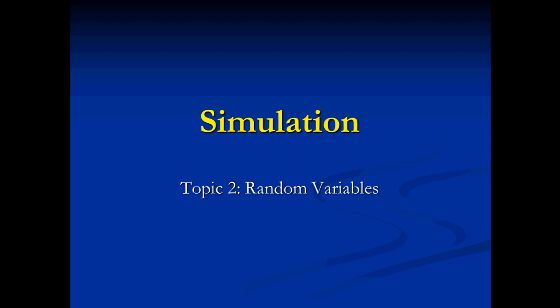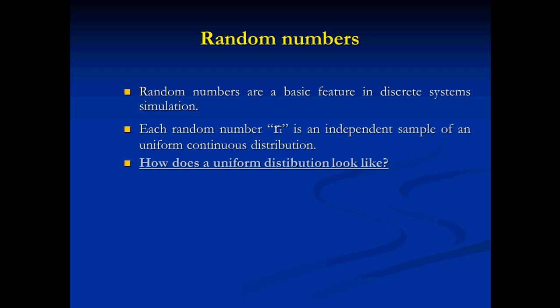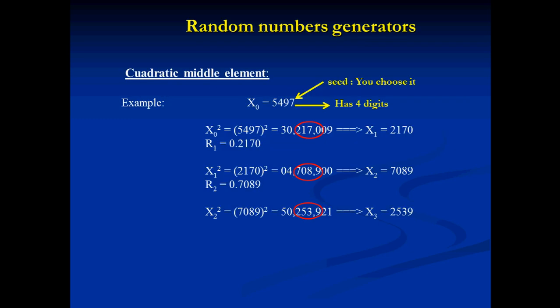We are going to start with Part 1 of random variables. First of all, we are going to talk about random numbers. These are a basic feature in discrete system simulation. Each random number, which we are going to call R, is an independent sample of a uniform continuous distribution — one that in all of its intervals has the same frequency for each interval, as seen in a histogram.